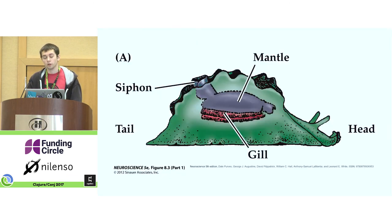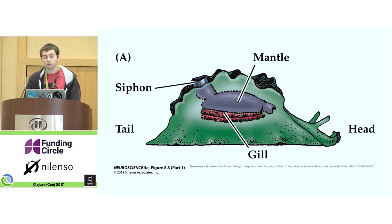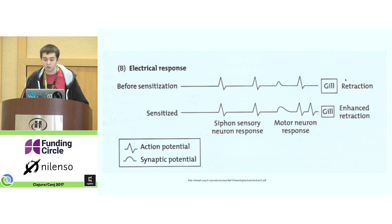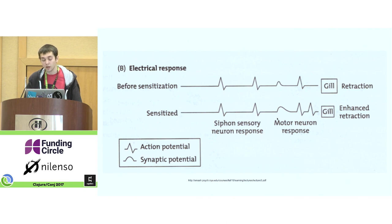There's another form of non-associative learning called sensitization. This was shown by applying an electrical shock to the tail of the animal. At first there's a more pronounced reaction because the animal is getting shocked. But after repeated shocks — with nothing about the shock state changing — there's actually an enhancement in the response that can be measured.